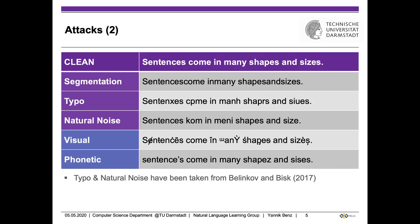The sixth attack is the segmentation attack. Here we join multiple words together into one word. The ability of humans to segment unsegmented input is already acquired during infancy. The seventh attack is the typo attack, where we replace letters by adjacent letters on the English keyboard randomly — this simulates human typing errors. The natural noise attack replaces words with natural human errors from the Wikipedia edit history, which contains multiple sources of error: phonetic errors, omissions, morphological errors, keyswap errors, and combinations of them.